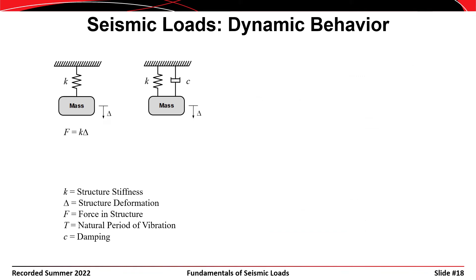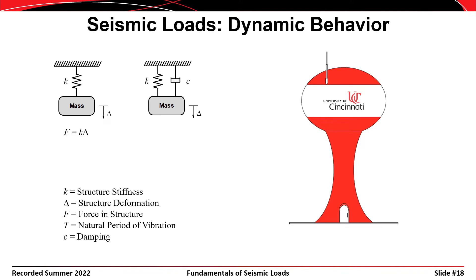These types of systems are referred to as single degree of freedom (SDOF) systems because there's only one displacement associated with them. You could use this to characterize something like a water tower, where the ground moves left and right and the tower sways at its top like an inverted pendulum. But that's not terribly helpful for characterizing the behavior of multi-story buildings.